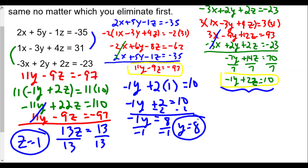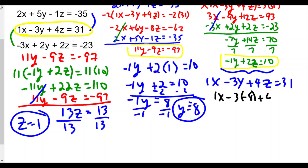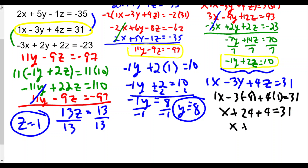Now we use our y and z values to solve for x. We'll pick the second original equation since it has x by itself. Plugging into 1x minus 3y plus 4z equals 31: x minus 3 times negative 8 plus 4 times 1 equals 31. So x plus 24 plus 4 equals 31, meaning x plus 28 equals 31. Subtracting 28 from both sides gives x equals 3.